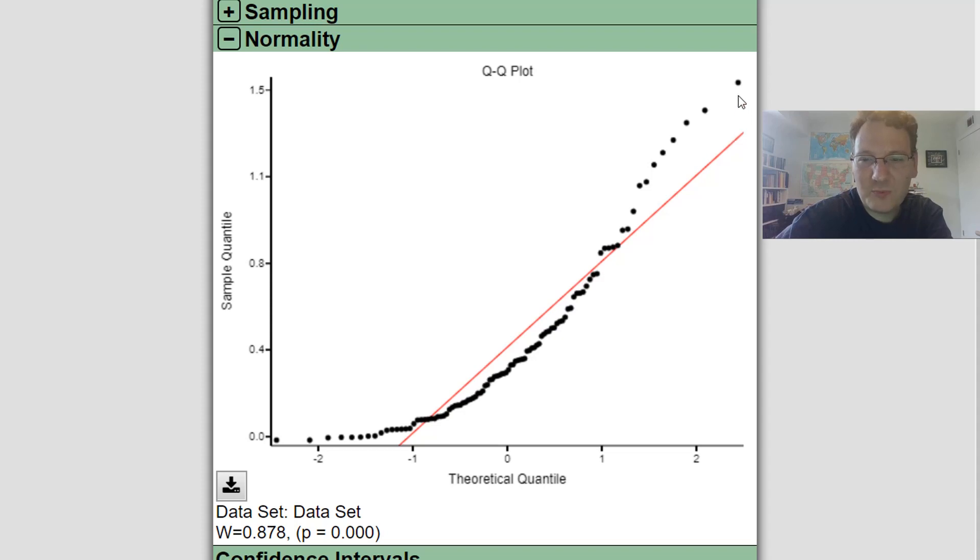So this looks pretty bad, to be honest. The points are really far off from this red line down here, then they go under the line, then they're over the line. This is not the shape that you would see if your data was normally distributed.